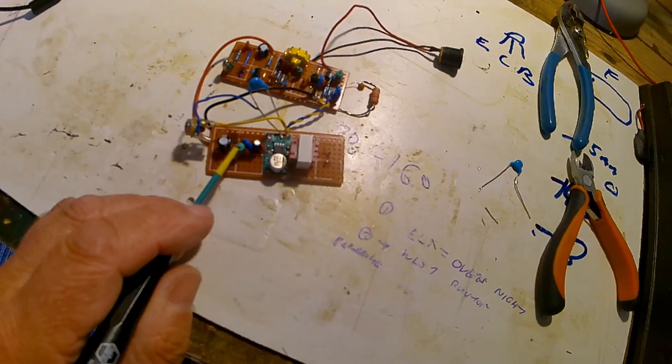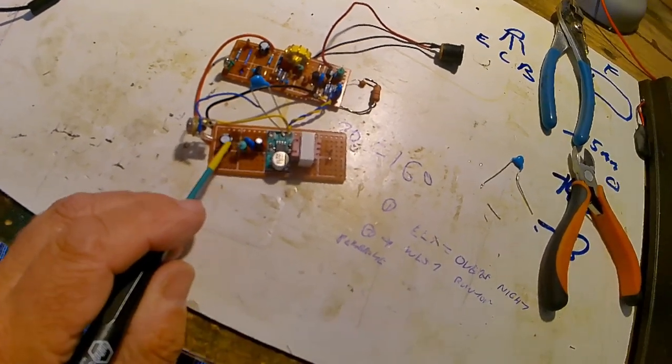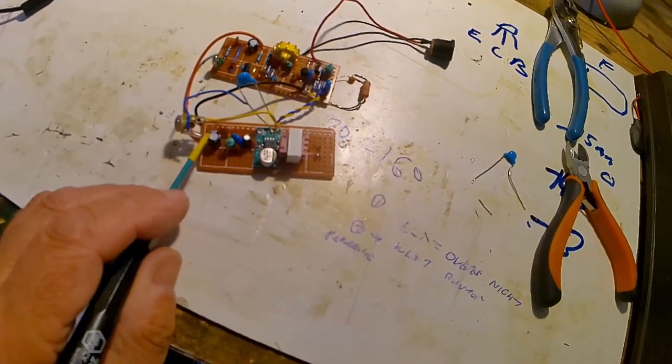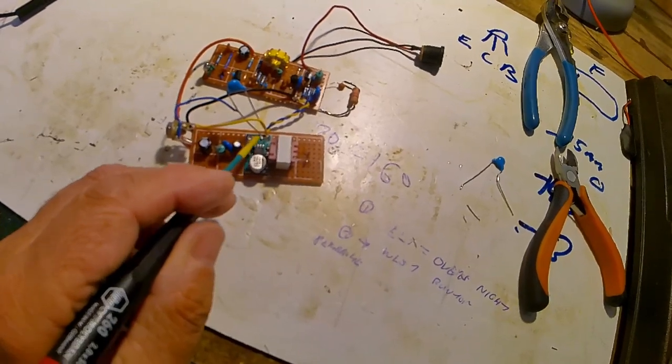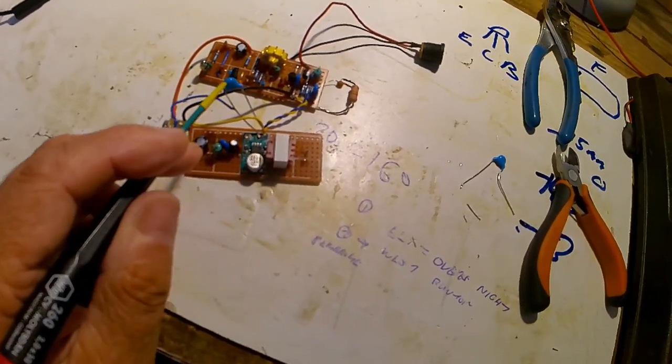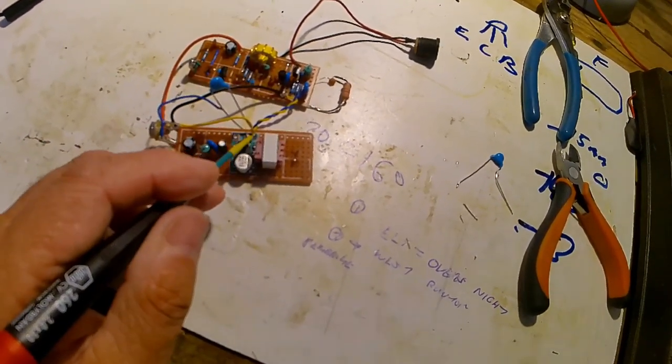I've got electrolytic capacitors, an inline choke in the power line just to the audio amplifier. Then the input connections, I've got a hundred picofarad across it to stop RF getting in there.